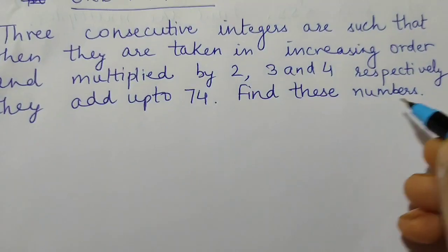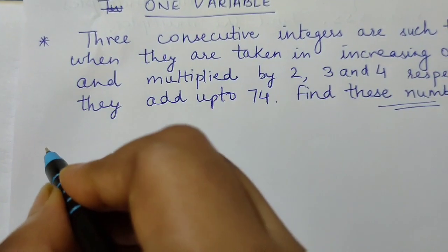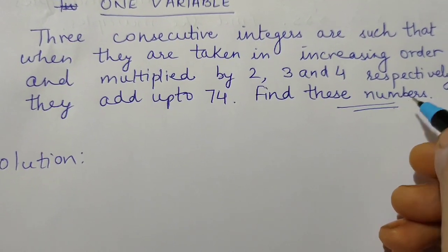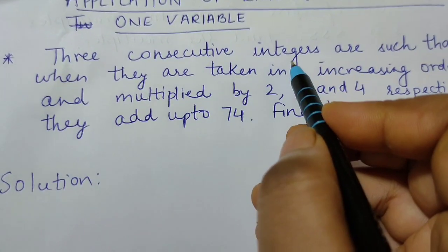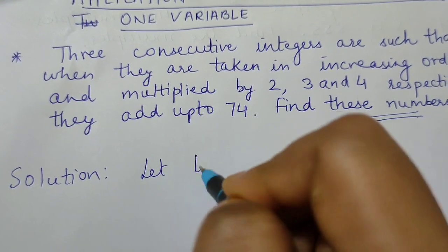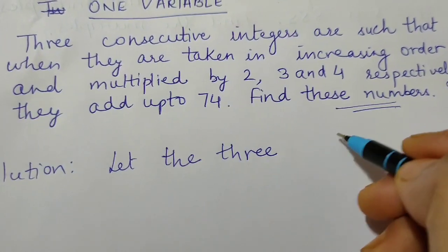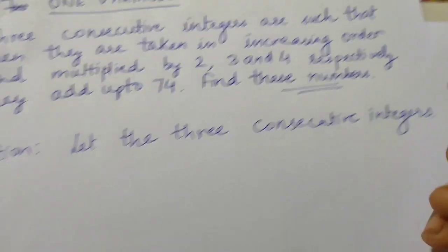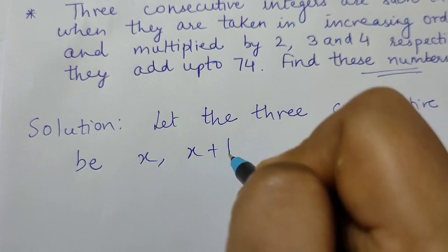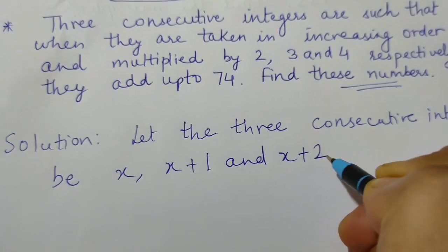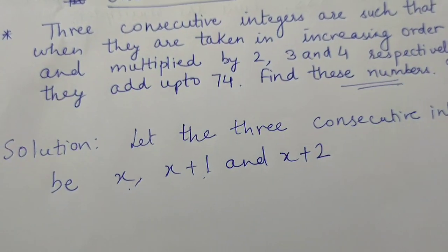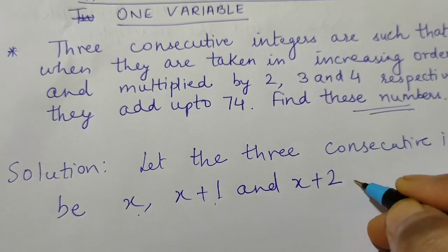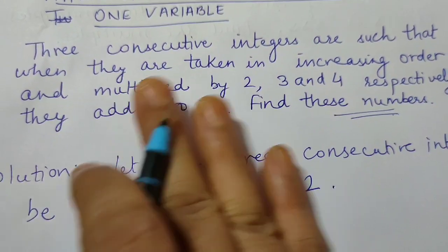To solve such word problems, we have to assume what we need to find. So let the three consecutive integers be taken as x, x plus 1, and x plus 2. Consecutive means one after the other, coming one after another. We have made sure they are in increasing order, and we have already taken them as such.